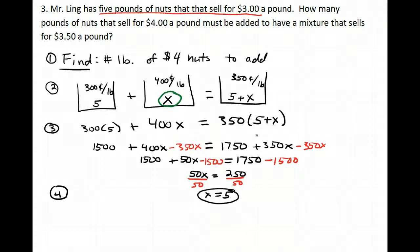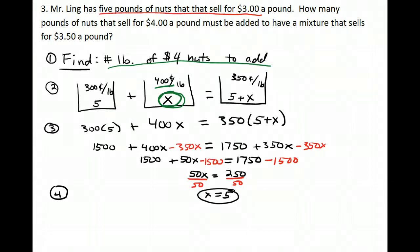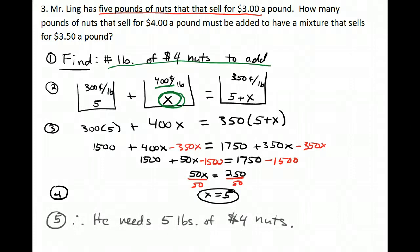Solving the equation, we get x = 5. X stands for the amount of $4 per pound nuts — exactly what we're trying to find. Therefore, he needs 5 pounds of the $4 nuts.